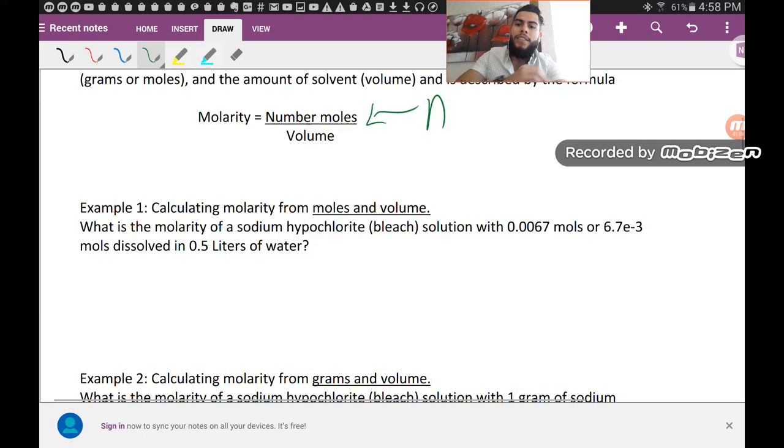Let's move on to example number one: calculating the molarity from moles and volume. What is the molarity of a sodium hypochlorite bleach solution? This is your bleach solution that you can use to disinfect things at home. You can dilute this, put five tablespoons of bleach to one liter of water and have yourself another disinfecting solution. So this solution contains 0.0067 moles, or 6.7 times 10 to the negative 3 moles, dissolving 0.5 liters of water. And they're asking me, what is the molarity?